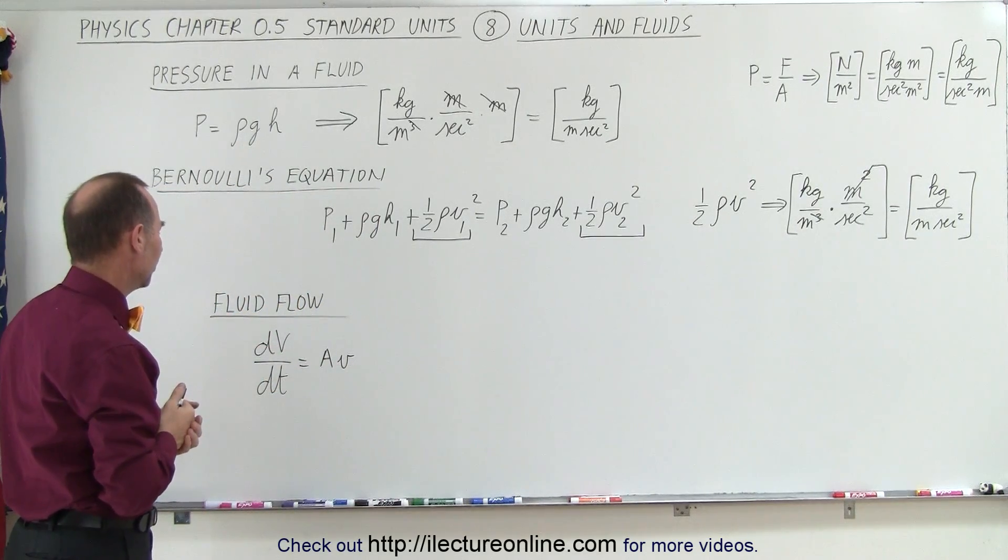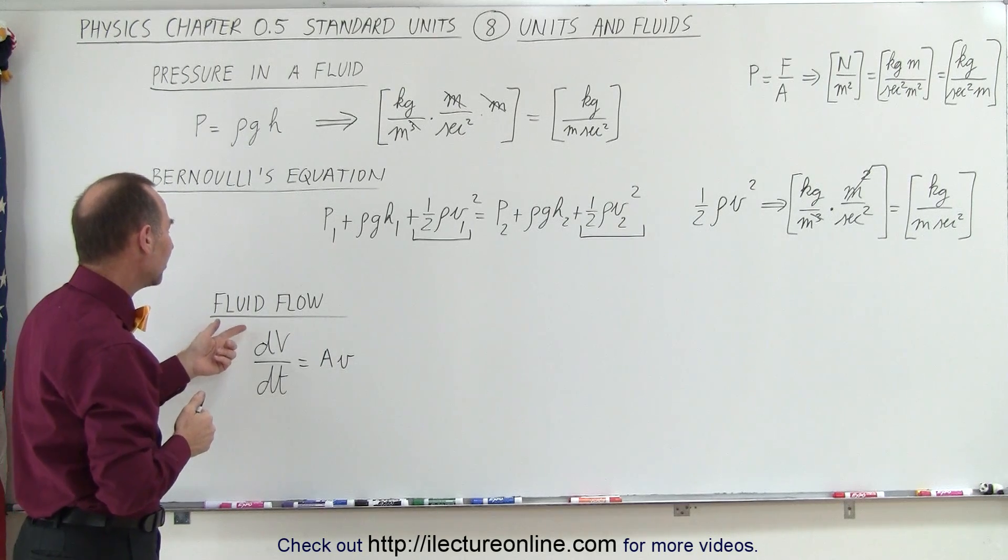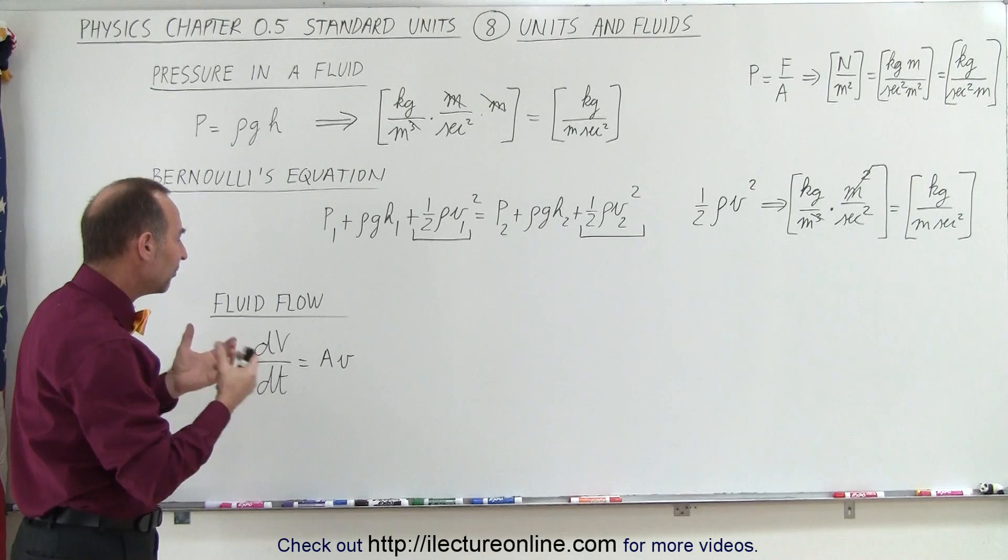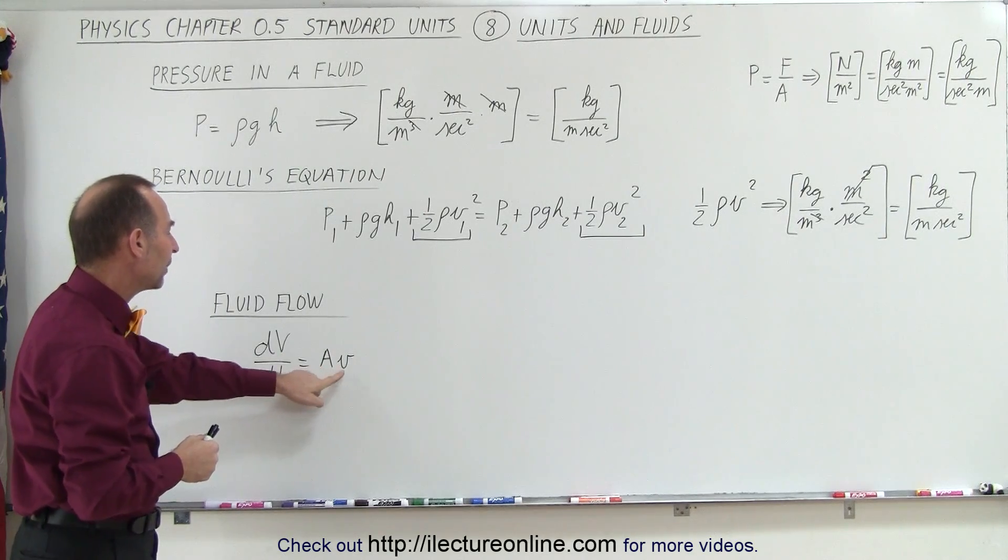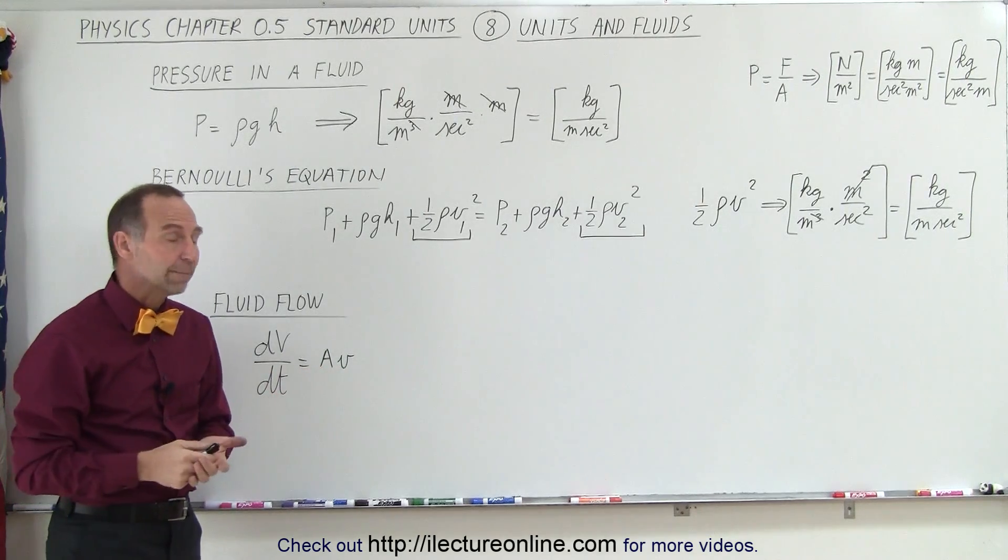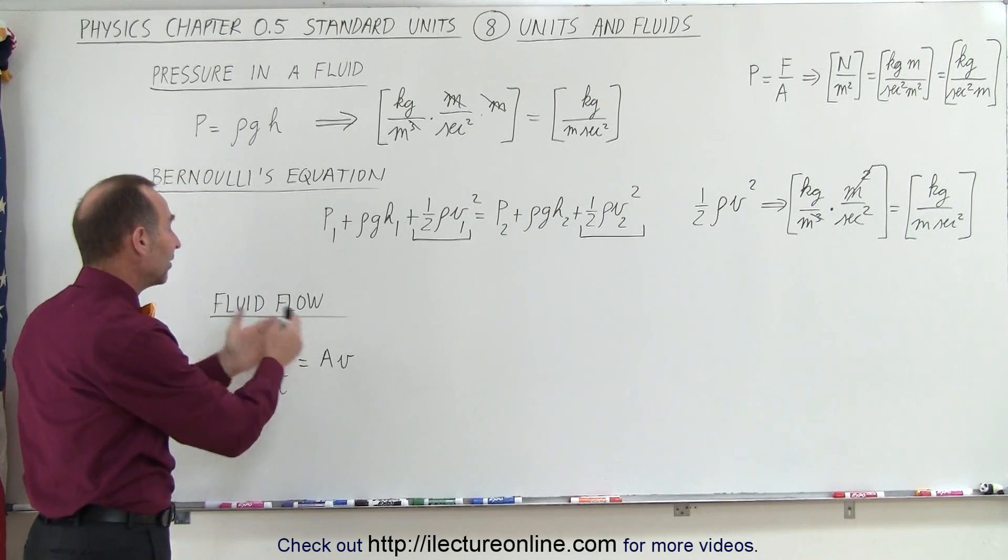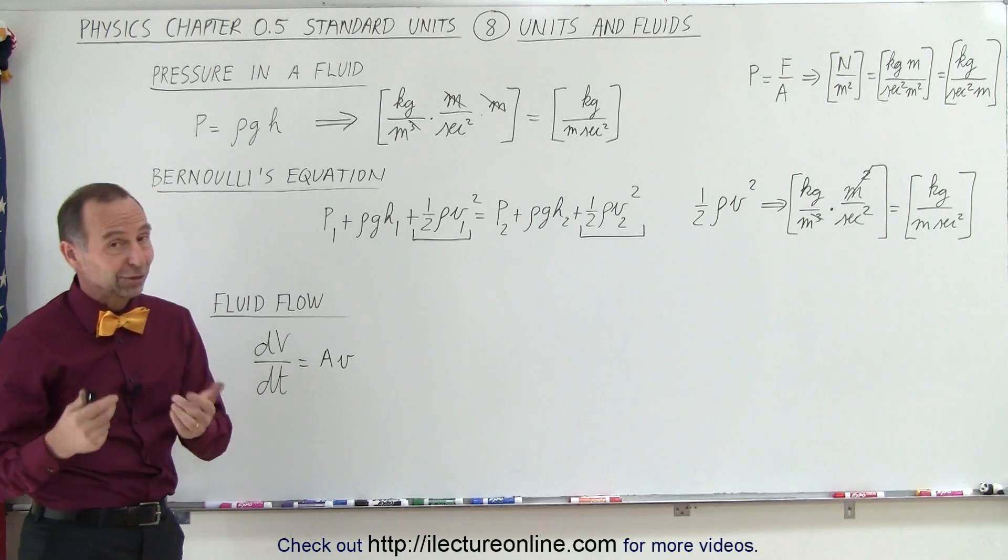Now let's talk about fluid flow. We have the equation where the amount of volume per unit time that passes by a given point in a pipe, for example, is equal to the cross-sectional area of the pipe times the velocity of the fluid. Well, let's find out what the units are on the left side of the equation and the units on the right side of the equation, and again, they should be the same.